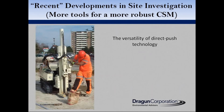This slide shows how compact a Geoprobe direct push drill rig can be. This is one of the smaller mobile track vehicle rigs that can be used — you can drive it right into a building and get to pretty much anywhere we need to do our investigation.